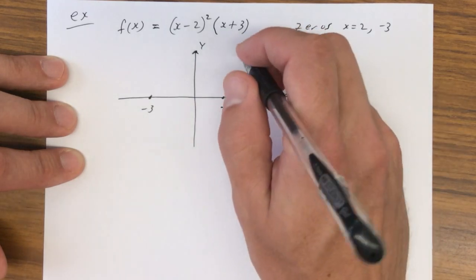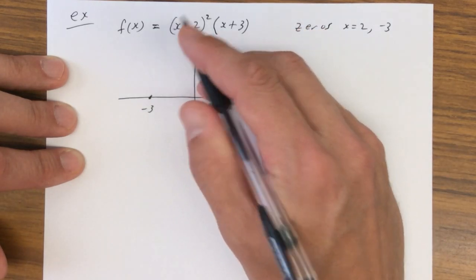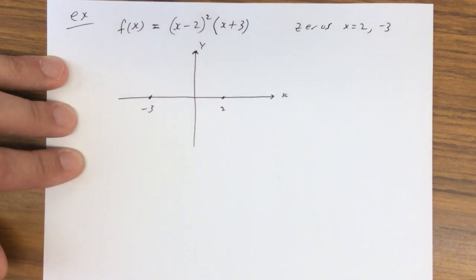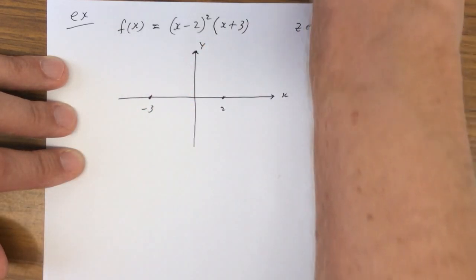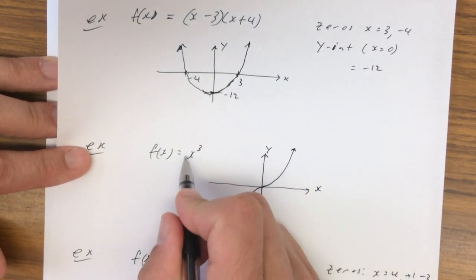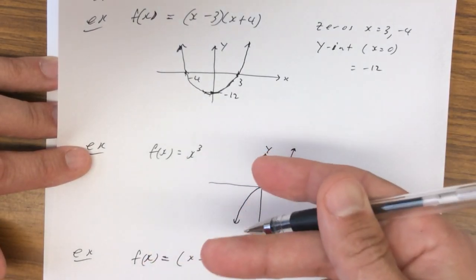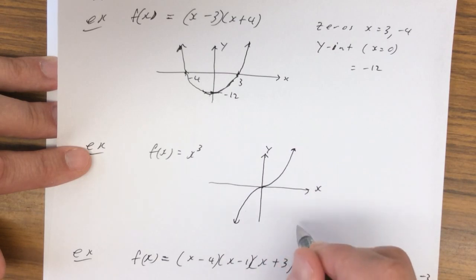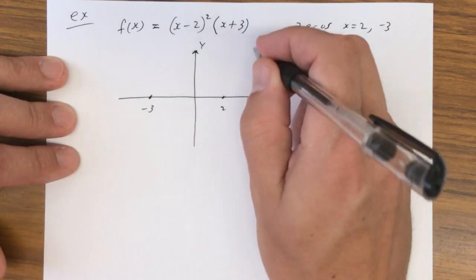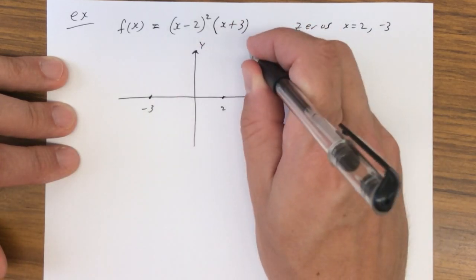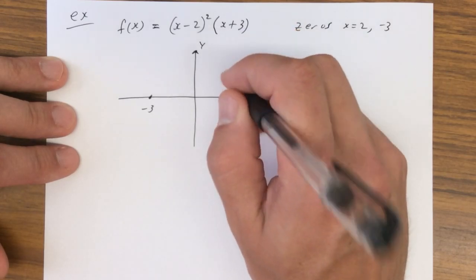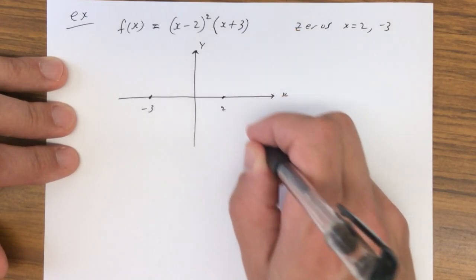Because the leading coefficient is positive, this behaves like x cubed. If it were negative, it would go from the bottom — negative x cubed is just x cubed flipped vertically. So when a is positive, the right-hand side goes up; when a is negative, the right-hand side goes down.